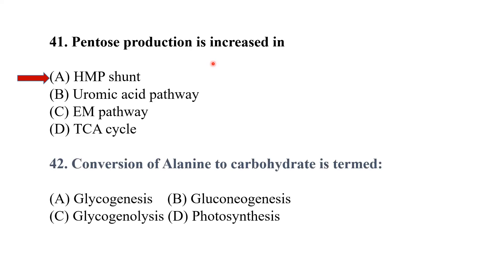Conversion of alanine to carbohydrate is termed gluconeogenesis — alanine is converted to carbohydrate through the process of gluconeogenesis.